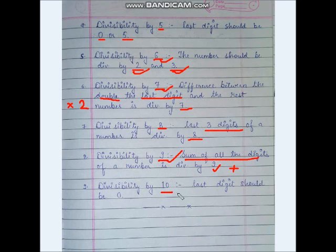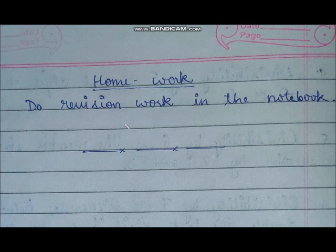Divisibility by 10: if the last digit is 0, then the number is divisible by 10.